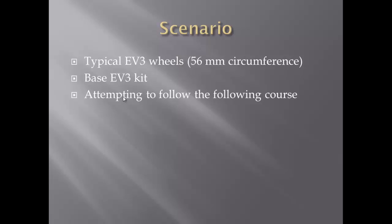So our scenario is we have typical EV3 wheels which come in the set and they're 56mm in circumference. Most LEGO wheels have their circumference posted on the side of the wheel but you can also measure it using measuring tape. Base EV3 kit which is important for the gap between the two wheels, so how far the wheels are apart.